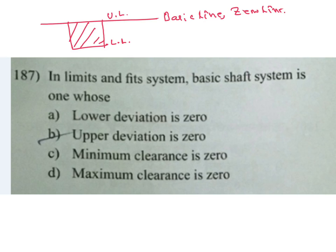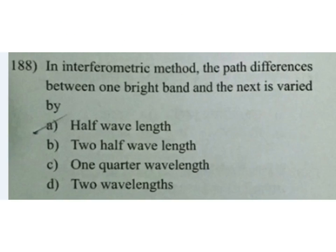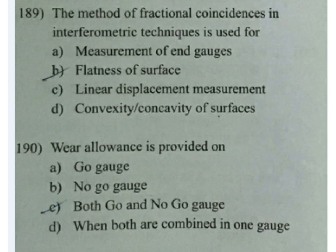In the interferometric method, the path difference between one bright band and the next is varied between: A half wavelength, B two half wavelengths, C one quarter wavelength, D two wavelengths. B is the answer. If you don't know the answer, choose any one because there is no negative marking. The method of fractional coincidences in interferometric techniques is used for measurement of end gauges. A is the answer.